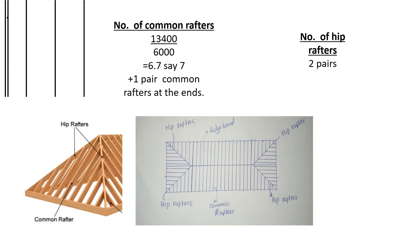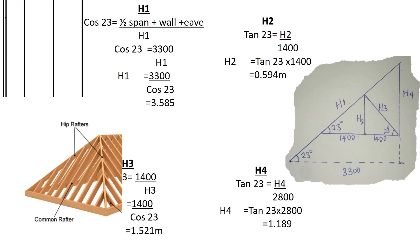On the hipped ends we shall have the hip rafters, and at the center a common rafter. We shall have purlins on top of them so that the roof covering can lie on the purlins. The hip rafters — we have two pairs on each end, as you can see on the roof plan. We shall then go on to calculating the struts, ties, tie beam, and the king post.